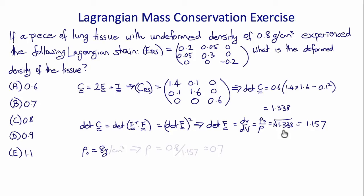Now if rho naught is 0.8 grams per centimeter cubed, therefore rho is 0.8 divided by 1.157, which is approximately equal to 0.7, which is choice B.